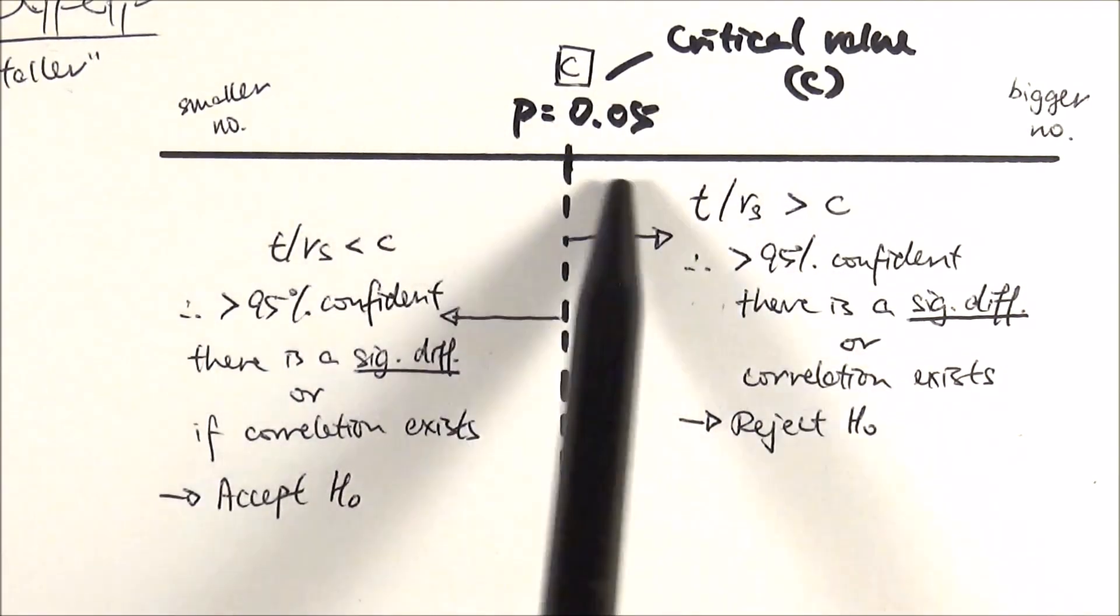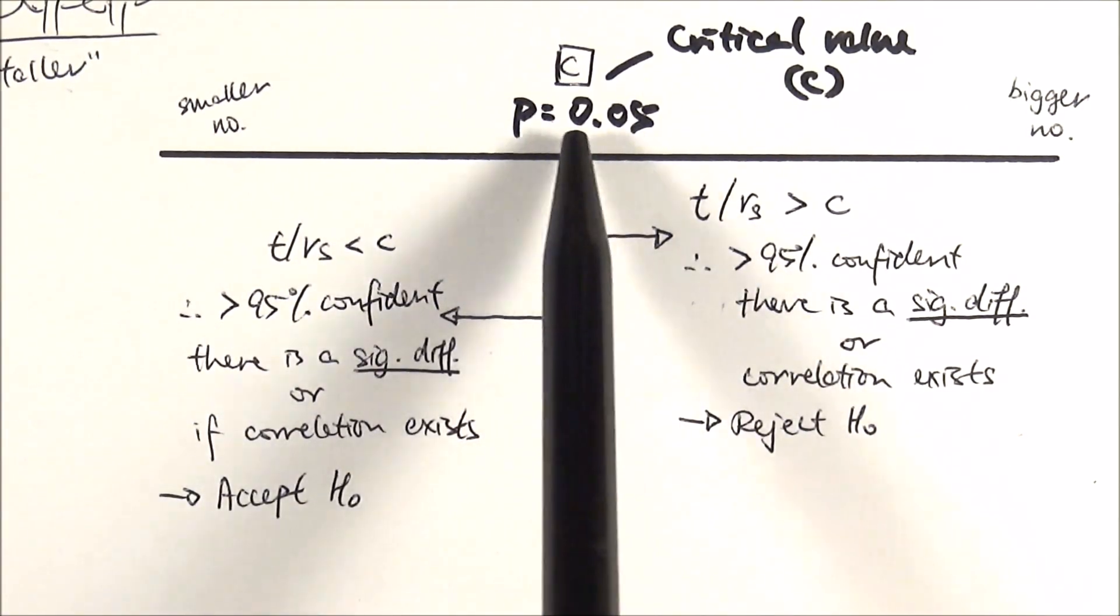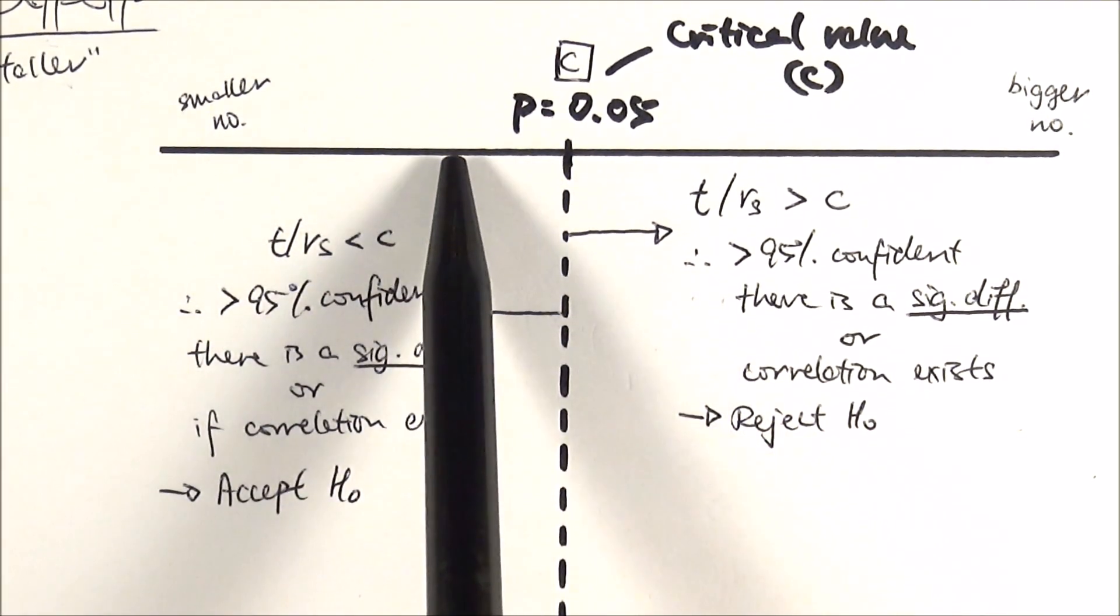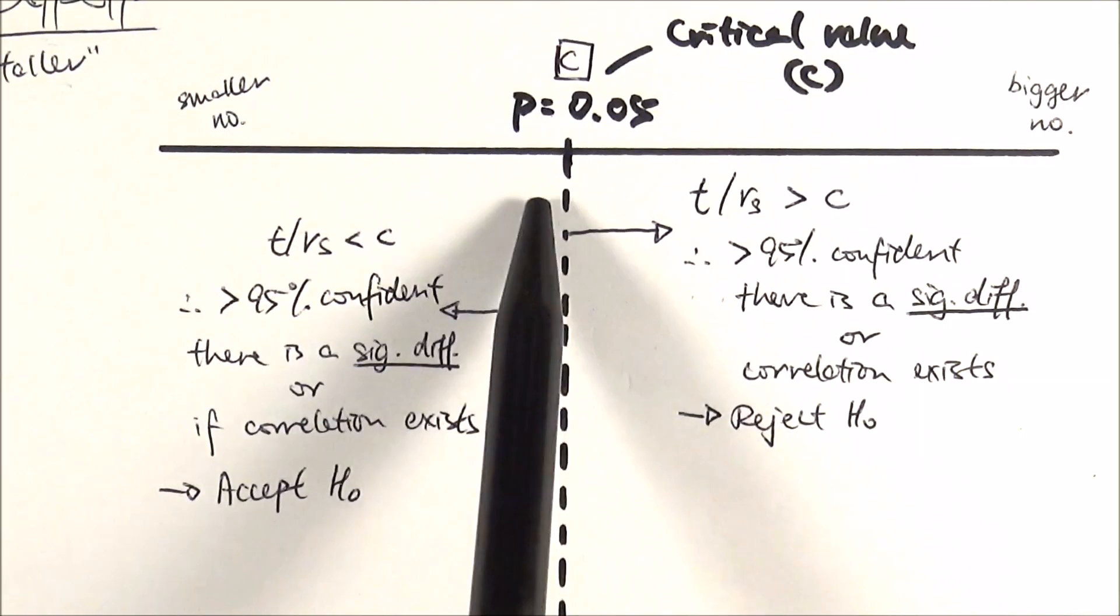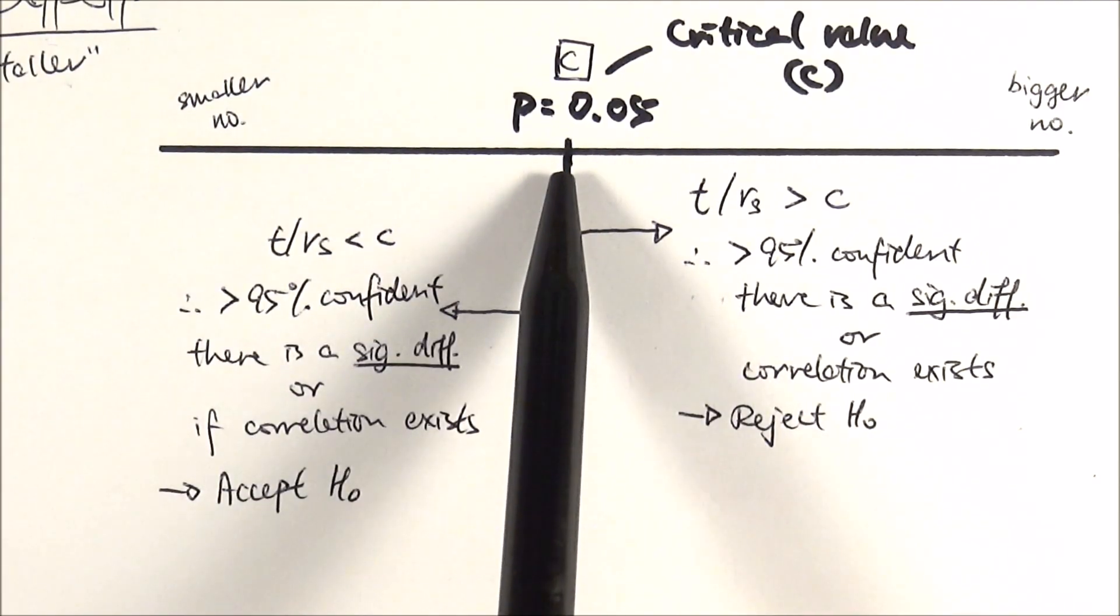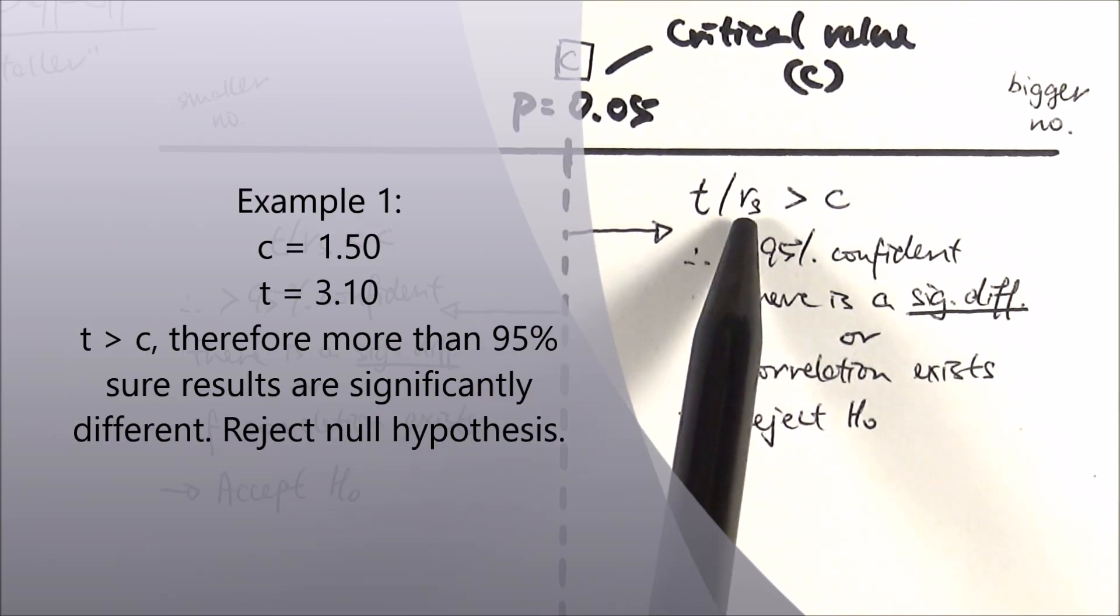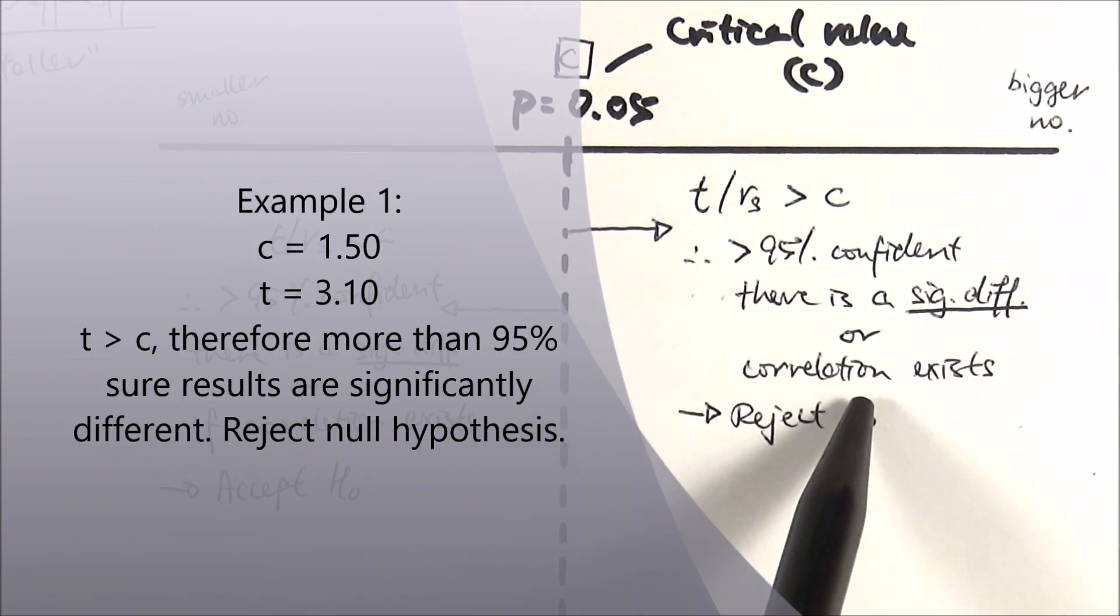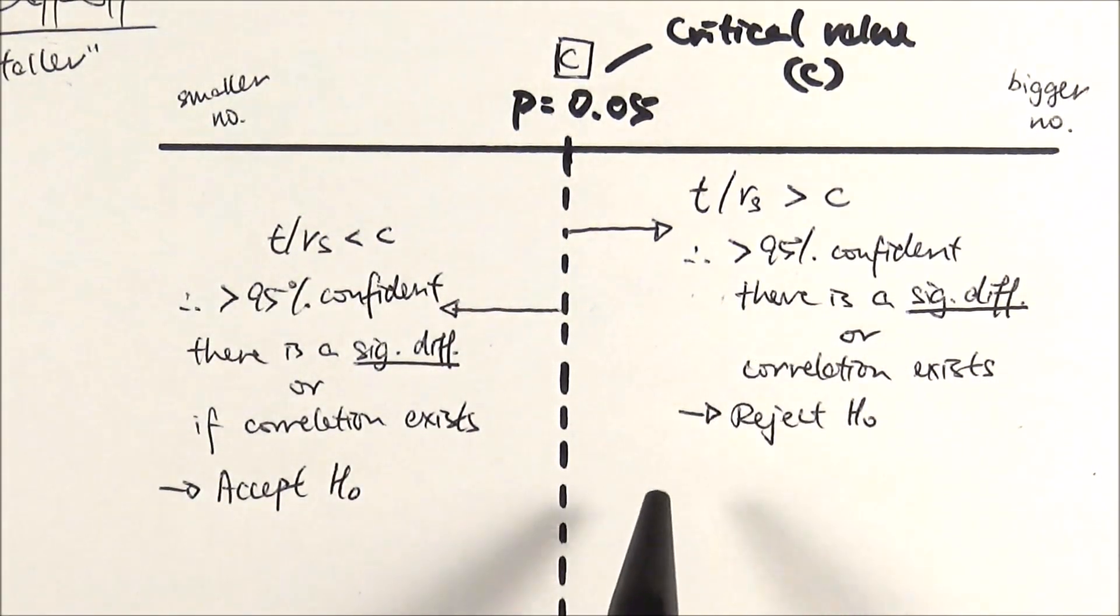Let's conclude very quickly. From our degrees of freedom and the probability table, we will find a critical value at p equals 0.05. What this number, p equals 0.05, means is that we have a five percent probability that our results are due to chance, or to rephrase it, we have a 95 percent probability that our results are significantly different or that a correlation exists. Then we compare the value. Let's say if our critical value is 1.50 at p equals 0.05 and my t value is 3.1, then I can say my t value or rs value is bigger than my critical value, therefore I am more than 95 percent confident that there is a significant difference or that correlation exists, and therefore I reject the null hypothesis. Here I'm saying yes, I am really quite sure, I'm 95 percent sure that something is going on here that is worth investigating into.